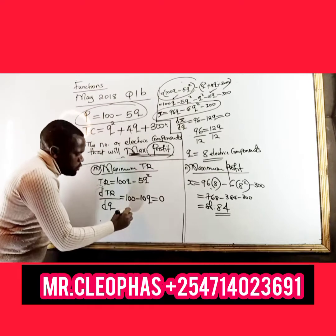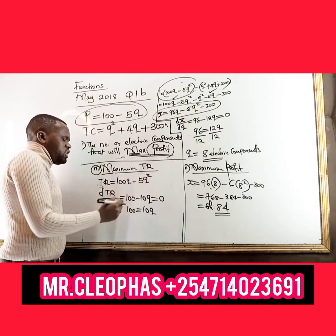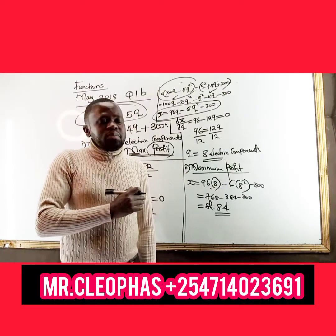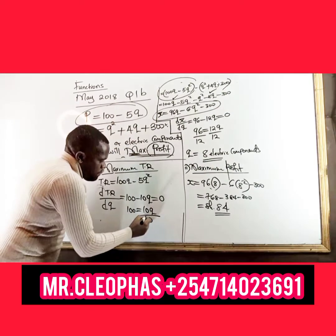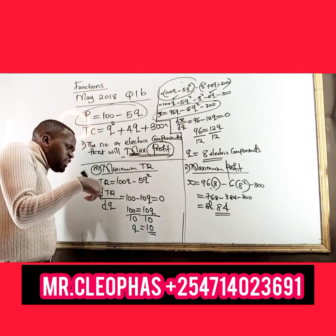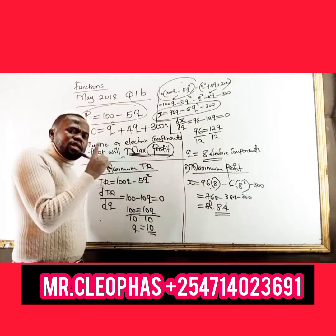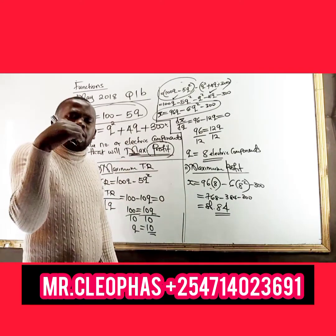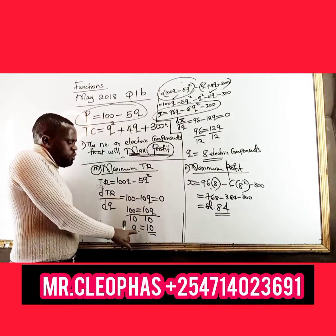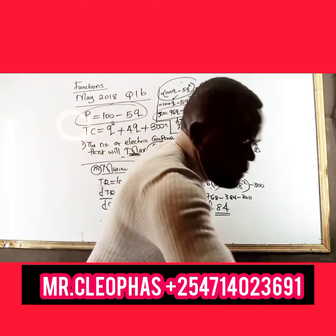After setting equal to 0: 100 equals 10Q, so Q equals 10 units. If the examiner required only the units to maximize revenue, we stop here. But since the examiner requires the maximum revenue, after getting Q equals 10 we substitute back into the revenue function wherever we have Q.